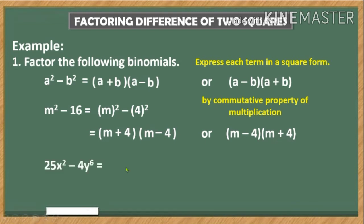In our next example we have 25x² - 4y⁶. Again, take note to express each term in a square form. This is not yet expressed in the square form.